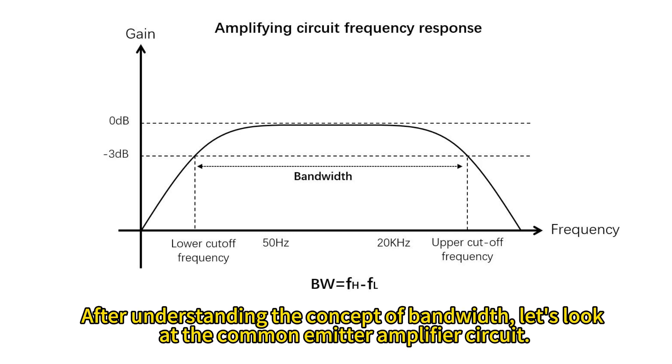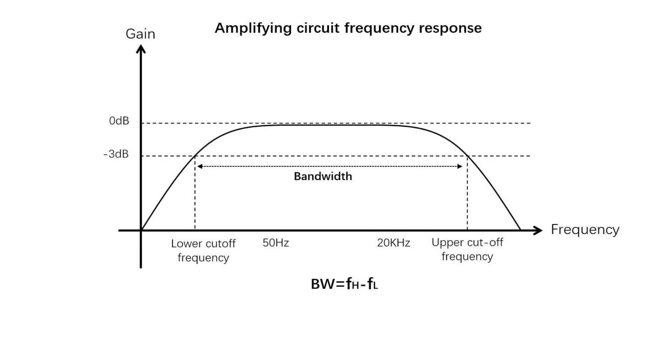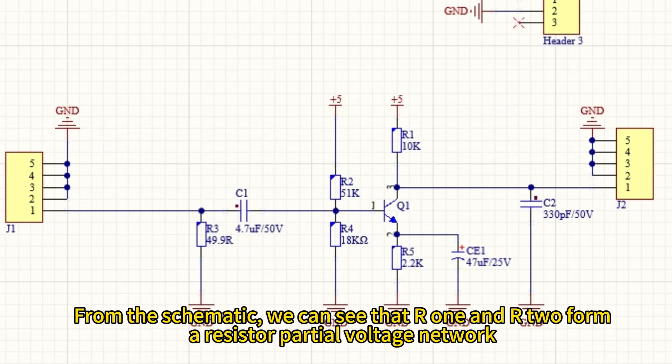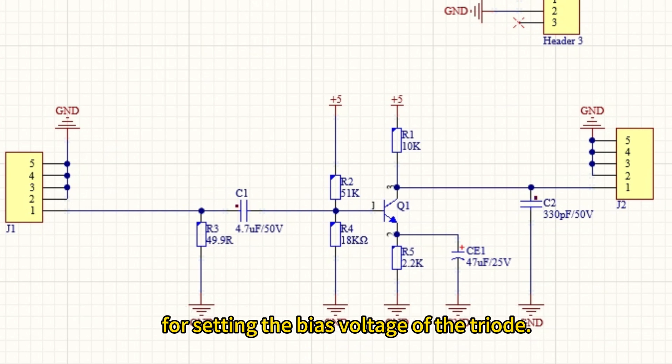After understanding the concept of bandwidth, let's look at the common emitter amplifier circuit. From the schematic, we can see that R1 and R2 form a resistor partial voltage network for setting the bias voltage of the triode.